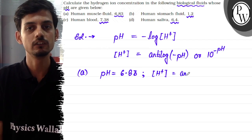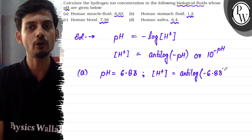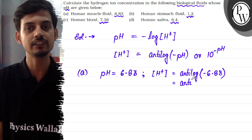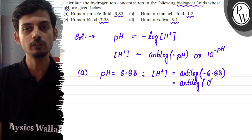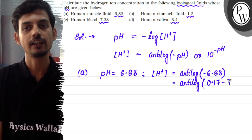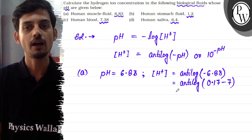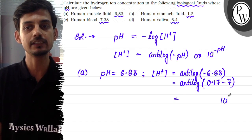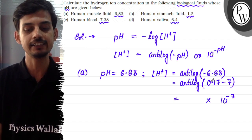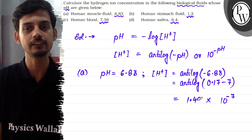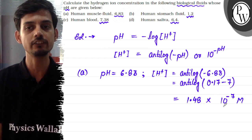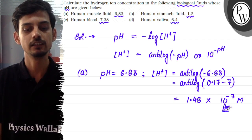For the first part, human muscle fluid, pH is 6.83. We write antilog of minus 6.83, which becomes antilog of (0.17 minus 7). The antilog of 0.17 is approximately 1.48, and 10 to the power minus 7 comes from the integer part. So the H⁺ ion concentration in human muscle fluid is 1.48 × 10⁻⁷ moles per liter.